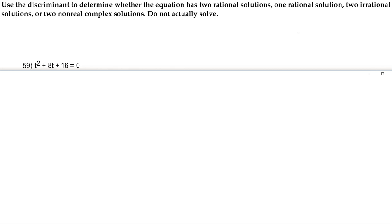Hey guys, so for number 59, we're going to use the discriminant to determine whether the equation has two rational solutions, one rational solution, two irrational solutions, or two non-real complex solutions, and we're not actually going to solve.